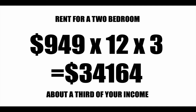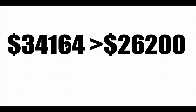That gives us our new yearly income, which is supposed to be equal to the federal poverty line. According to this calculation, the new federal poverty line comes out to $34,164. This is based on what I believe is the median cost of an apartment that could fit a family of four.